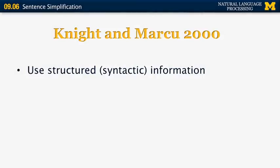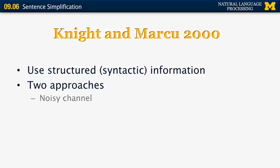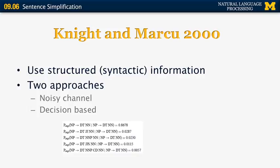In their paper, they use syntactic information from the sentences and compare two different approaches: one is a noisy channel based model, and one is based on decisions. The rules they have are based on the constituent tree of the sentence. For example, they may want to convert the rule 'a noun phrase goes to determiner, adjective, noun' to one that says 'a noun phrase goes to determiner, noun,' thereby dropping the adjective. They applied this approach on a corpus of simplified sentences from a computer manual, the so-called Ziff Davis corpus.